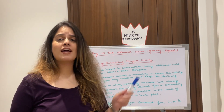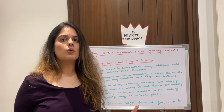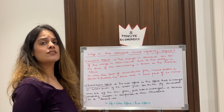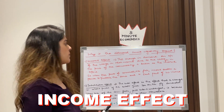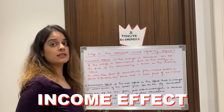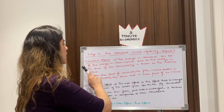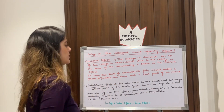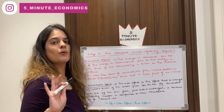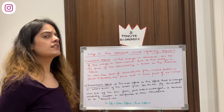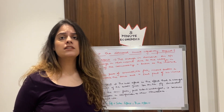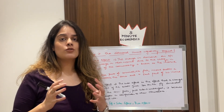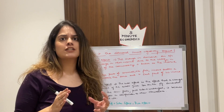Now coming to the other two causes of the negatively sloping demand curve: number one is the income effect. The income effect is the change in demand on account of a change in real income due to a change in price. Real income is essentially the purchasing power — the amount of goods that your income can purchase.